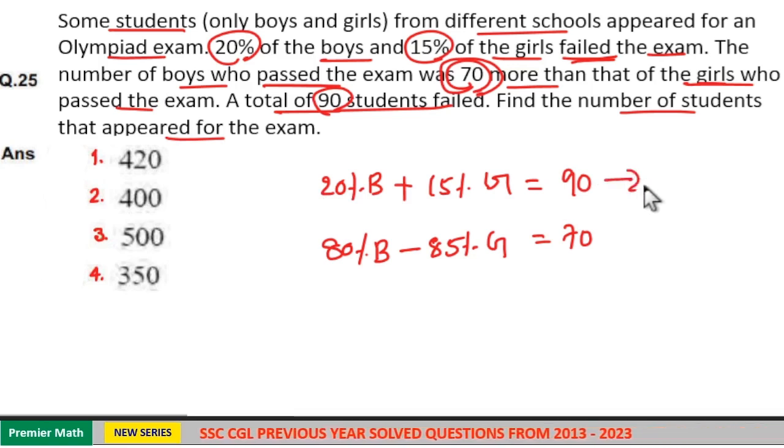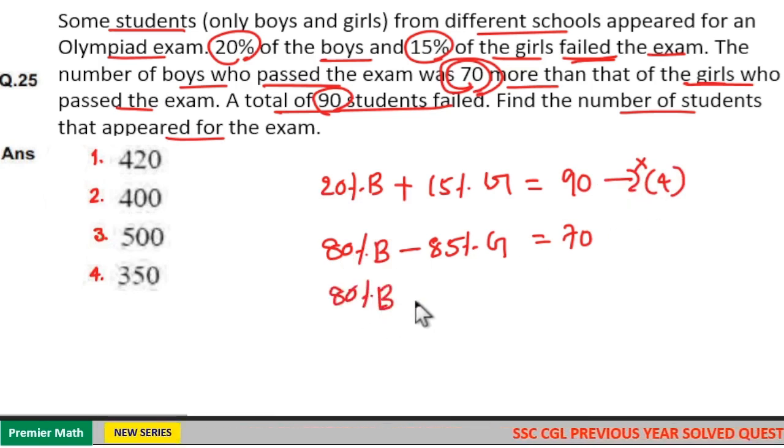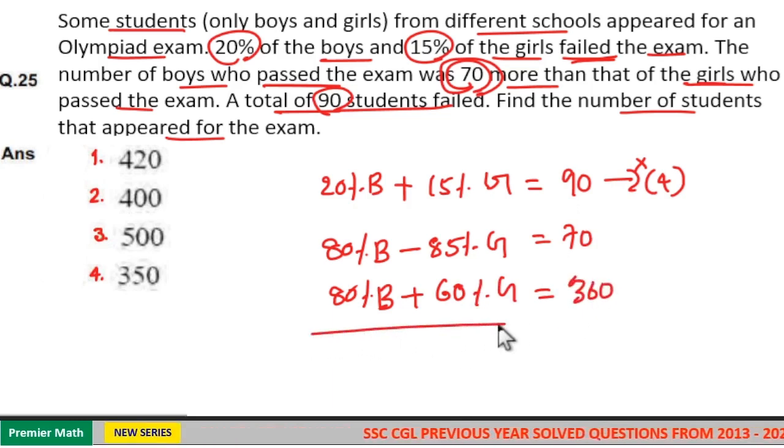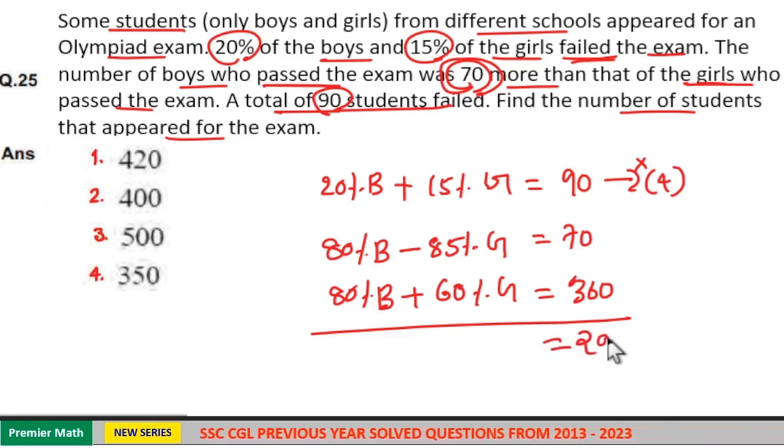Now, if I multiply this with 4, that will be equal to 20 into 4 is equal to 80% girls plus 15 into 4 is equal to 60% girls. 90 into 4 is equal to 360. Now, if I subtract 360 minus 70, which is equal to 290.